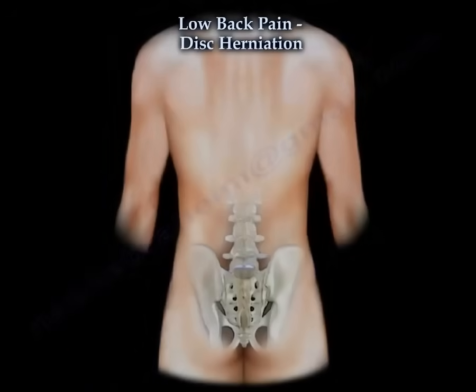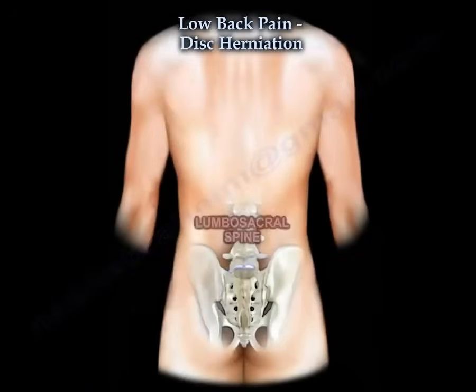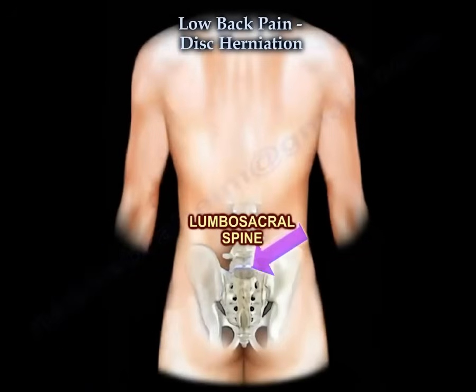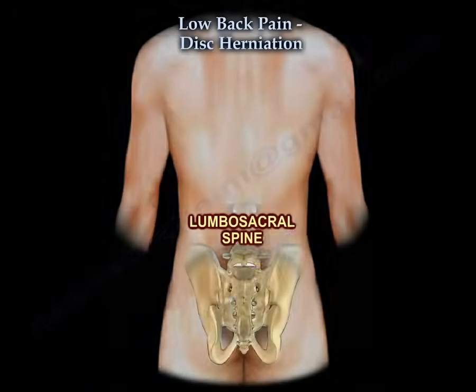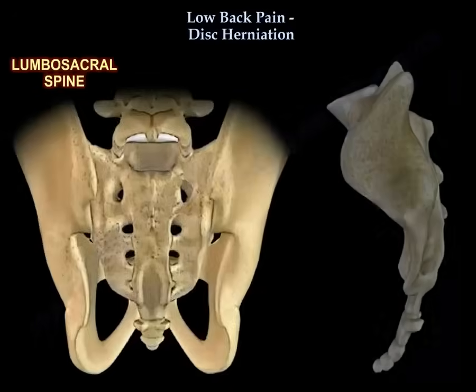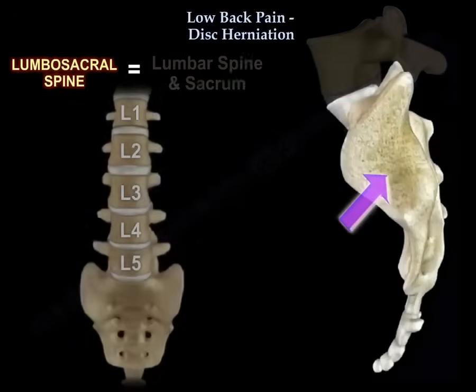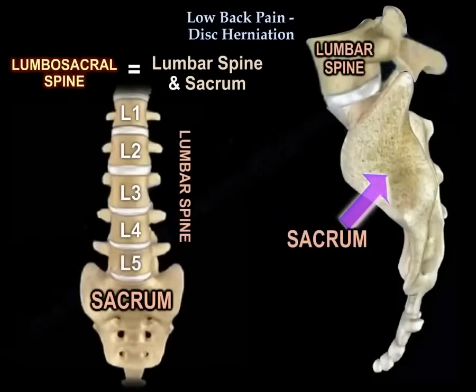These vertebrae are attached to the sacrum at the lower end of the spine. When we say the lumbosacral spine, it is the junction between the lumbar spine and the sacrum, between L5 and the sacrum, which is the tailbone.